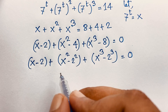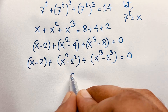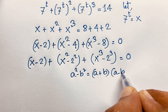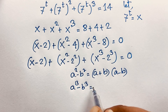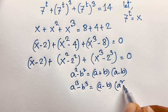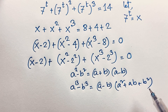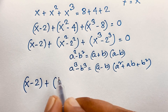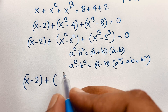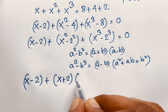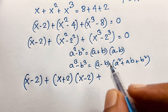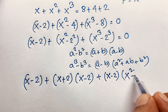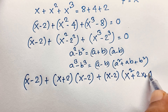We know a squared minus b squared equals a plus b times a minus b. And a cube minus b cube equals a minus b times x squared plus ab plus b squared. Applying both formulas here: x minus 2 times x squared minus 2 squared, which gives x plus 2 times x minus 2; and x cubed minus 2 cubed gives x minus 2 times x squared plus 2x plus 4, all equal to 0.